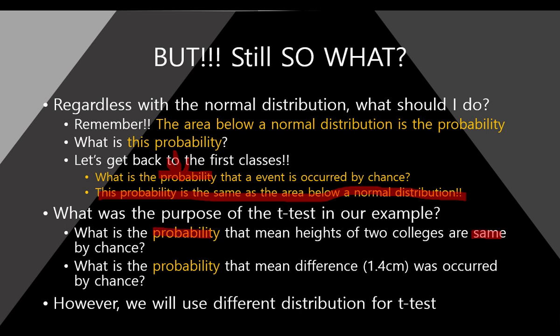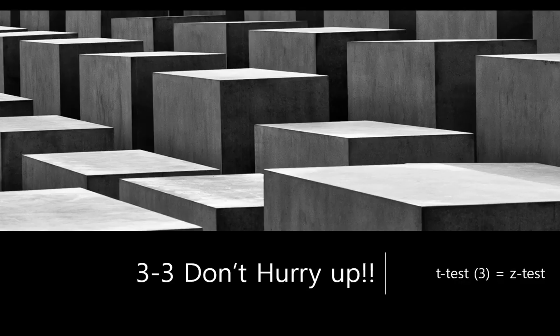So it means that our question — what is the probability that an event is occurred by chance — is answered by the normal distribution or other distributions in statistics. So far, you just know normal distribution. Likewise, we find a kind of some area — the probability — and you can apply that probability to this question. So what was the purpose of the T-test in our first example? Our question was: what is the probability that mean height of two colleges are the same by chance? In other words, what is the probability that the mean difference of 1.4 cm was occurred just by chance? We must know this probability, and the T-test will let us know it. In next class, we will learn the T-test, but when we do T-test, we will use a different distribution — not normal distribution.